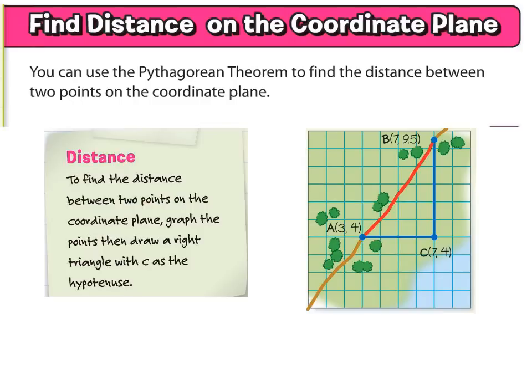Distance. To find the distance between two points on the coordinate plane, graph the points, then draw a right triangle with C as the hypotenuse. So in this graphic, you can see how we have point A, point B, created a right triangle, and our hypotenuse is the red line.